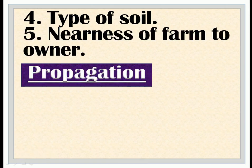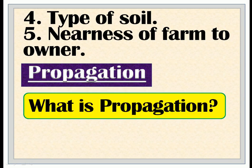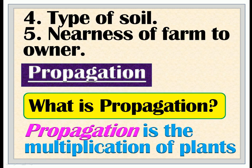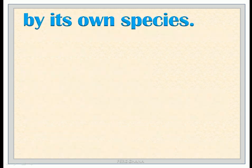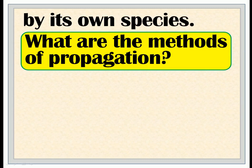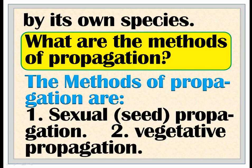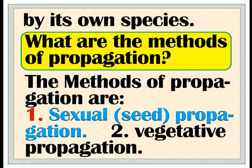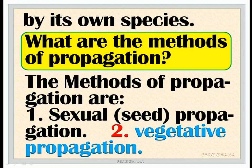Propagation: What is propagation? Propagation is the multiplication of plants by its own species. The methods of propagation are: 1. Sexual propagation; 2. Vegetative propagation.